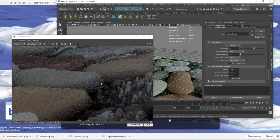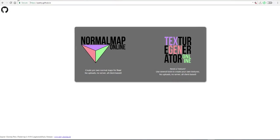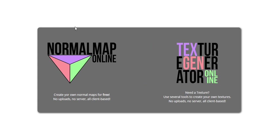Once you come over to this website, the first things you're going to see are just these two options. With the two of them you'll be able to generate textures. It says normal map, but you can use it to create your normal, your displacement, your ambient occlusion, and so on. You can also check the lighting condition depending on what you want to achieve. We'll start off by looking at the texture generator.